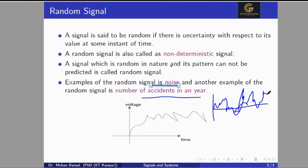Motor vehicles, fan noise, AC noise, and thermal noise are examples of random signals. Another example is the number of accidents in a year — we can't predict what the number of accidents will be in 2020 or 2022. But we can analyze the signal with the help of statistics, using mean, median, and mode on previous data. In the waveform of the random signal, you can see that the signal is randomly moving with no specific pattern, and we can't represent it by a mathematical equation.